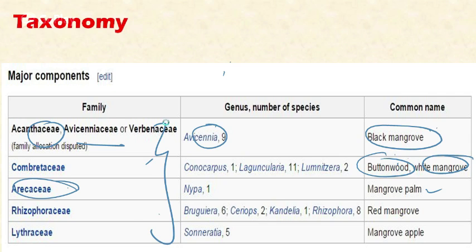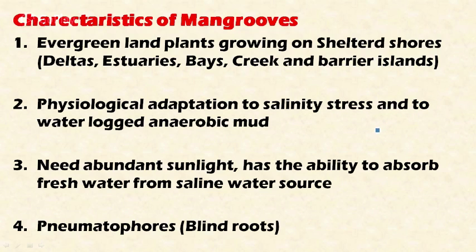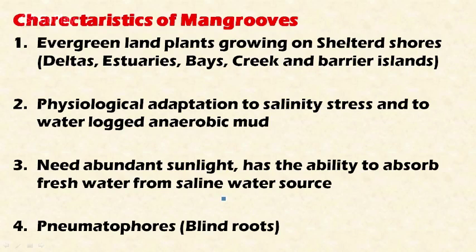Let's look at the important characteristics of mangroves. These mangroves are basically evergreen land plants growing on sheltered shores, typically on tidal flats, deltas, estuaries, bays, creeks, and barrier islands. These are the places where mangroves grow. They have physiological adaptations to salinity stress and to waterlogged anaerobic mud conditions. They have various mechanisms to adapt to these conditions, and these mangroves need abundant sunlight.